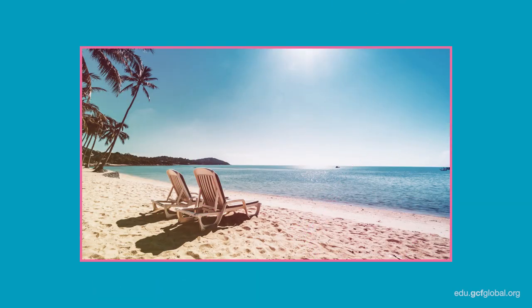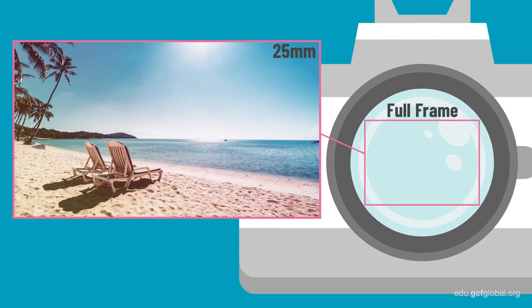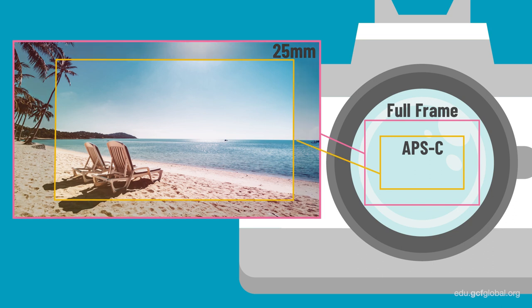Let's look at an example. This photograph was taken with a focal length of 25mm on a full-frame camera. Now, if the camera sensor were APS-C, which is smaller, we would see something like this.